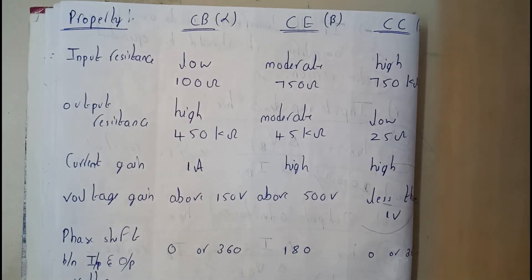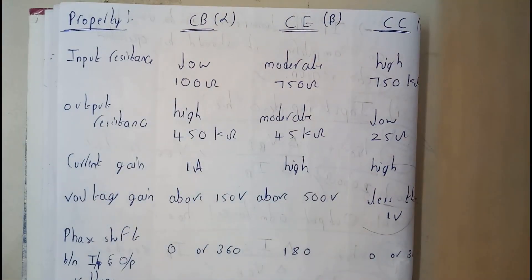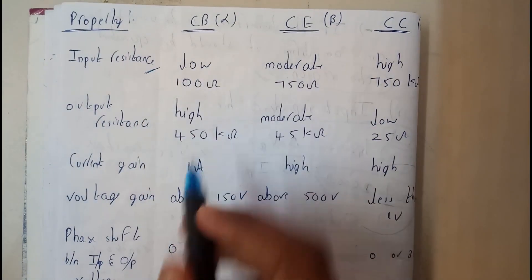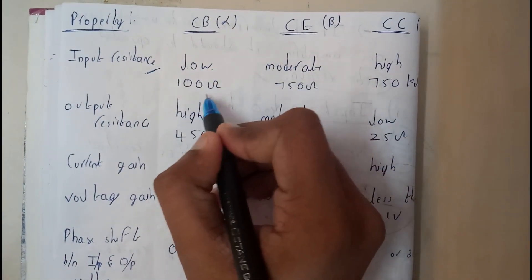So basically let us go through one after the other. So input, the input resistance is low in common base, that is 100 ohms.